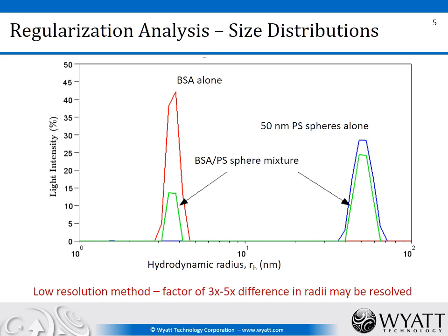Here are examples of three different measurements. Bovine serum albumin, a smaller particle, produces a single monomodal peak with an average radius of about 3.6 nanometers. A 50 nanometer polystyrene sphere produces a blue monomodal peak with an average value of 50 nanometers and some polydispersity representing the width of the peak. If we measure a mixture containing both BSA and the polystyrene spheres, which are sufficiently separated in size, we see two distributions centered around each particle, each with its own average value and width.